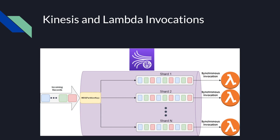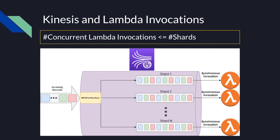It's important to understand that each shard in a Kinesis stream can be thought of as a separate queue with its own throughput limitations. Lambda handles this by invoking a separate concurrent Lambda invocation synchronously to read records from each dedicated shard. So by default you will have as many concurrent Lambda invocations reading from your stream as you have shards. For example, in a 4-shard Kinesis stream you will have at most 4 concurrent Lambda invocations by default.